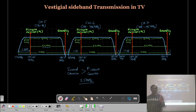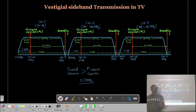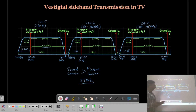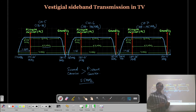To summarize the key points: the picture carrier is amplitude modulated using vestigial sideband transmission, where the complete upper sideband is transmitted but only a portion of the lower sideband is transmitted. The sound carrier is always a frequency modulated wave. This is how the audio information and video information are transmitted. Now let us see what the different channels used in television are.